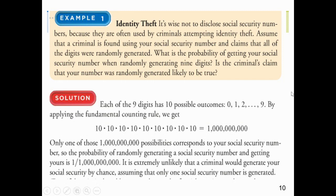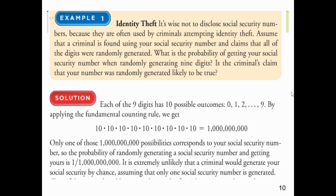It's not wise to disclose social security numbers because they can be used by criminals for identity theft. Assume a criminal claims all nine digits of your social were randomly selected. The first digit could be anything from 0 to 9 — that's ten choices. Same for each of the remaining eight digits. So there are ten multiplied by itself nine times, which equals one billion. The probability of randomly guessing your social security number is one in one billion. Nobody's going to guess it — they found it another way, such as your wallet or your garbage.